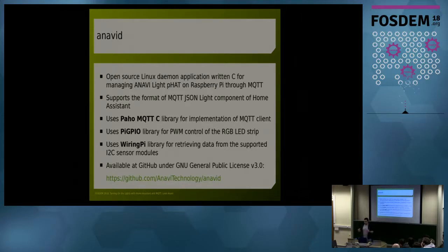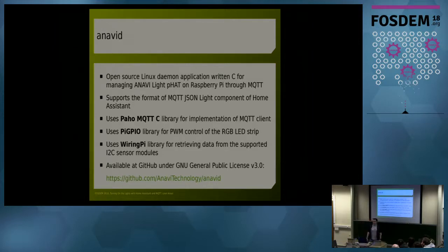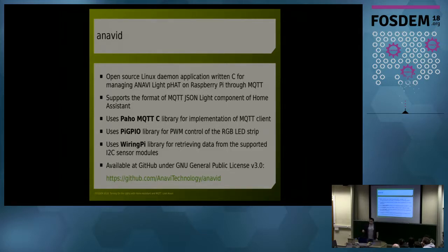In order to have all these things working together, I needed to create a small piece of software that integrates all the parts of this demonstration. It's called ANAVId daemon — the D comes from daemon. Back in the past I had some legal issues with the names of my hobby projects, so from now on I'm just using my surname to avoid any legal issues. It's open source, available on GitHub under a GPLv3 license, and it relies on a lot of popular open source libraries: PAHO MQTT C client, PIGPIO — a library for Raspberry Pi that allows me to control the colors of the RGB strip with pulse-width modulation — and WiringPi, a popular library I'm using for reading data from I2C sensors and publishing MQTT messages about it.